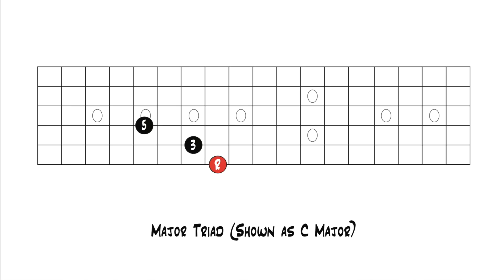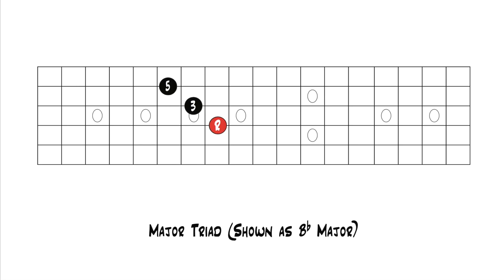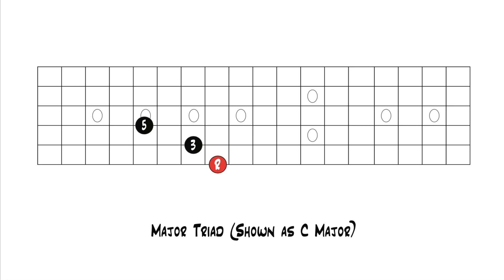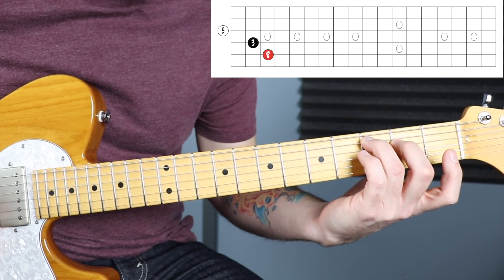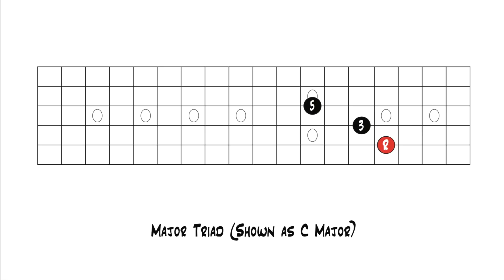Whatever your root note is, that's the name of the chord. When I kept all these shapes on the same frets moving through string sets, the root on the sixth string was a C major triad, the root on the fifth string was an F major triad, next was a Bb major triad, then an Eb major triad. But if you want to keep the same chord — say C major — you can't keep the shape at the same frets. To play a C major triad with the root on the fifth string, you need your root to land on a C note. You can build it from one C or from one an octave higher — they're just an octave apart.